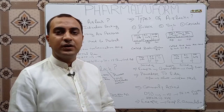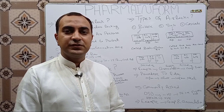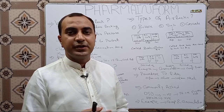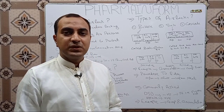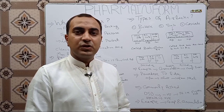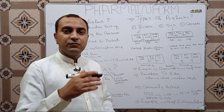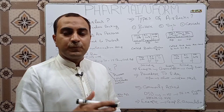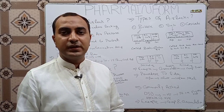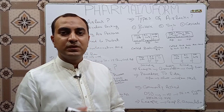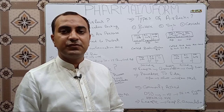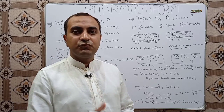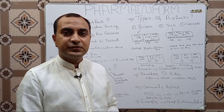Before going into details of airlocks, you must be familiar with working in pharmaceutical industries. We have different grades or clean rooms in pharmaceutical industries like Grade A, Grade B, Grade C, and Grade D. Each grade has its own classification and its own level of cleanliness. Grade A is the cleanest area and Grade D is the least clean area in pharmaceutical industries.